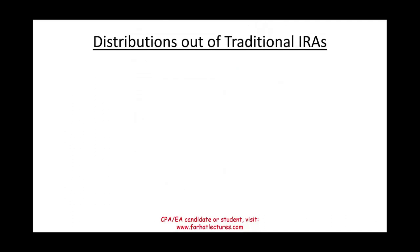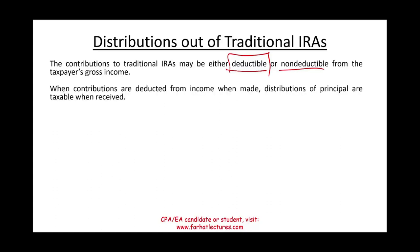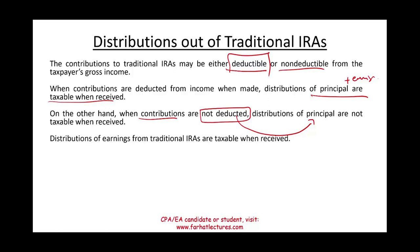Let's talk about distributions out of a traditional IRA. The contribution to a traditional IRA may be either deductible or not deductible. When the contributions are deducted, the principal amount is taxable when received — and of course, the principal plus the earnings, because you didn't pay any taxes on the earnings yet and the principal went in tax-free. On the other hand, when contributions are not deductible, the principal amount when you take out the money is not taxable because you already paid taxes on it. Distribution of earnings from all IRAs is taxable whether it's deductible or not deductible. Importantly, distributions from a non-deductible IRA are prorated between principal and earnings based on the relative amount available in the account at the time of distribution.